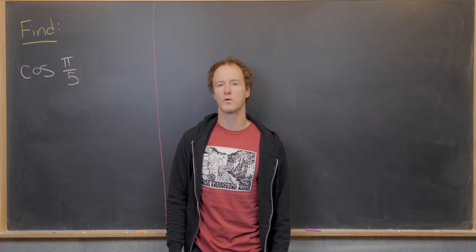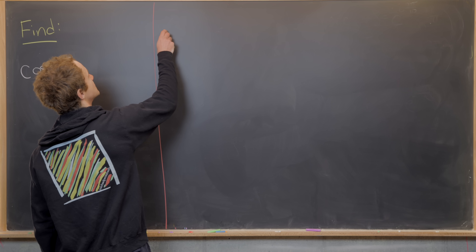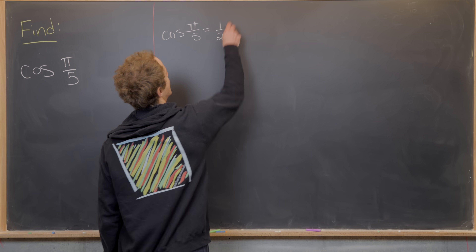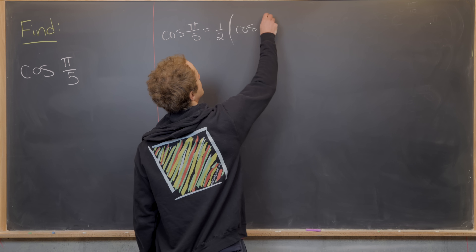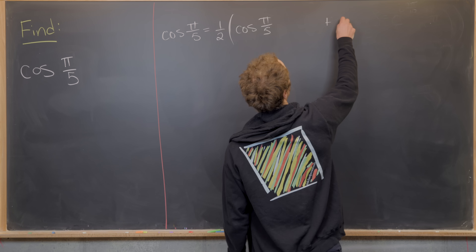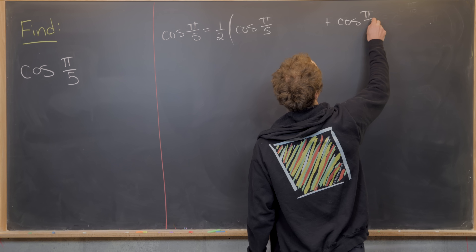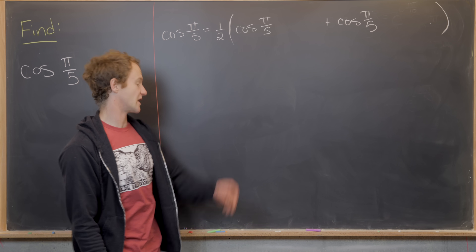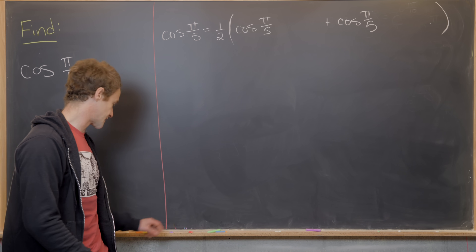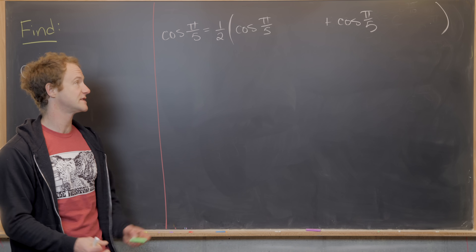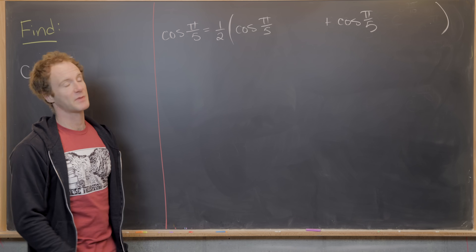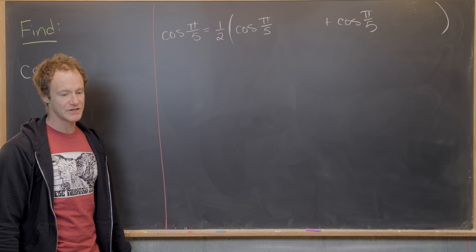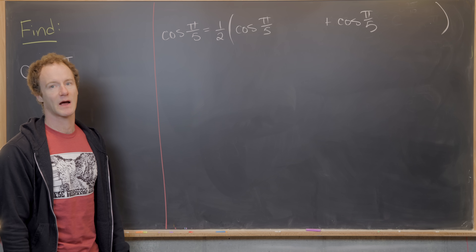We're going to get started with a really trivial step. We're going to take cosine of π/5 and write it as ½ times (cosine of π/5 plus cosine of π/5). Cosine of π/5 plus cosine of π/5 is just twice cosine of π/5, multiplied by a half gives just one copy. So we did the age-old mathematics trick of multiplying by 1.